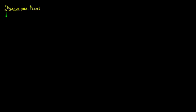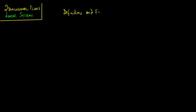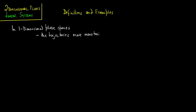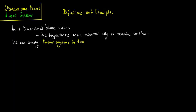We now move on to the study of two-dimensional flows and we start the study with linear systems. This lecture will center around definitions and some examples. In one-dimensional phase spaces, the trajectories move monotonically or they remain constant. We now study linear systems in two dimensions.